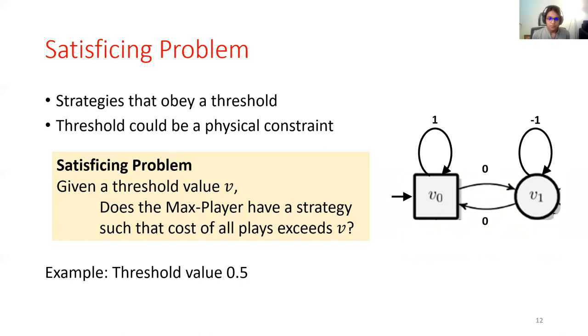Let's try to concretize this through an example. Suppose the square states are owned by the maximizing agent, and the circle states are owned by the minimizing agent. And now I want to know whether there exists a satisficing strategy for the maximizing player with respect to threshold value half. And the answer to this is yes, because as long as the maximizing player remains in state V0 for a good enough amount of times before moving to any other state, that strategy will be a satisficing strategy.